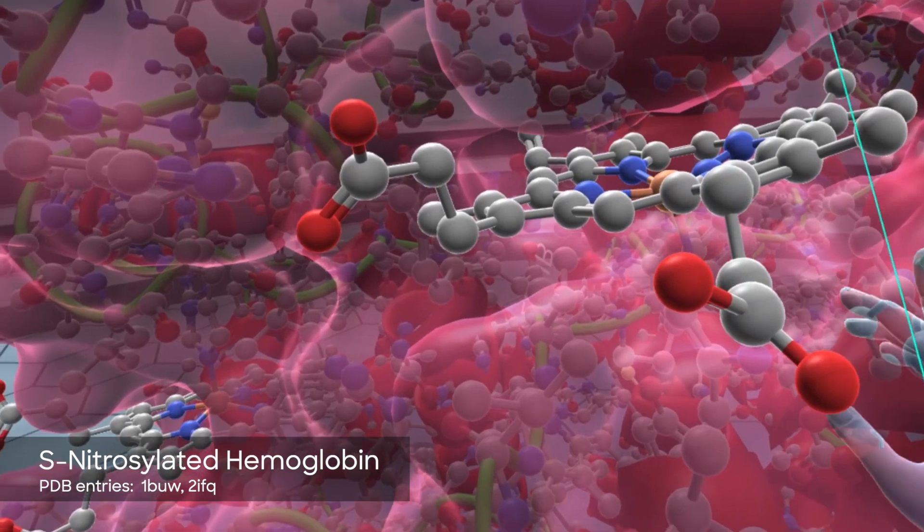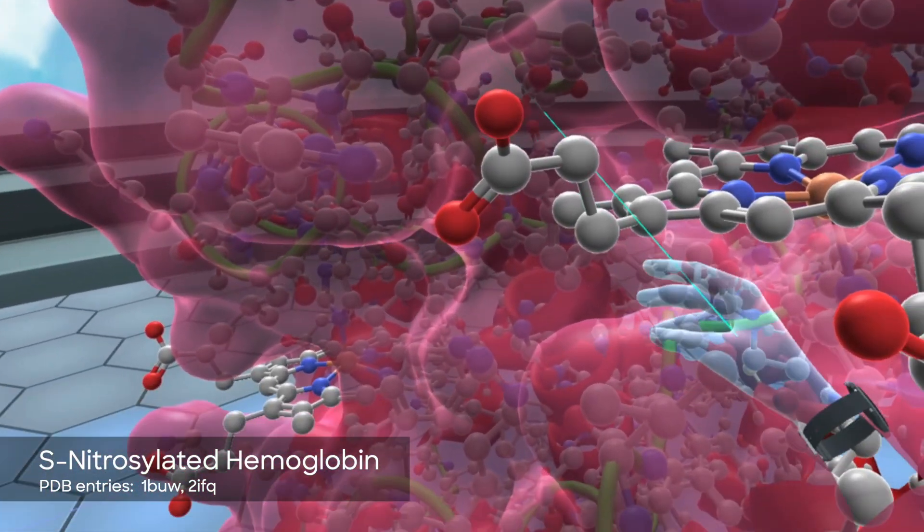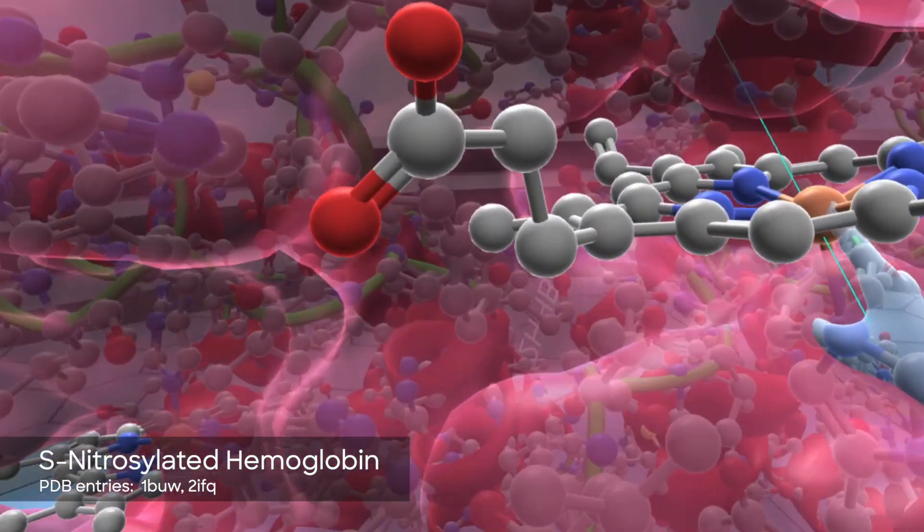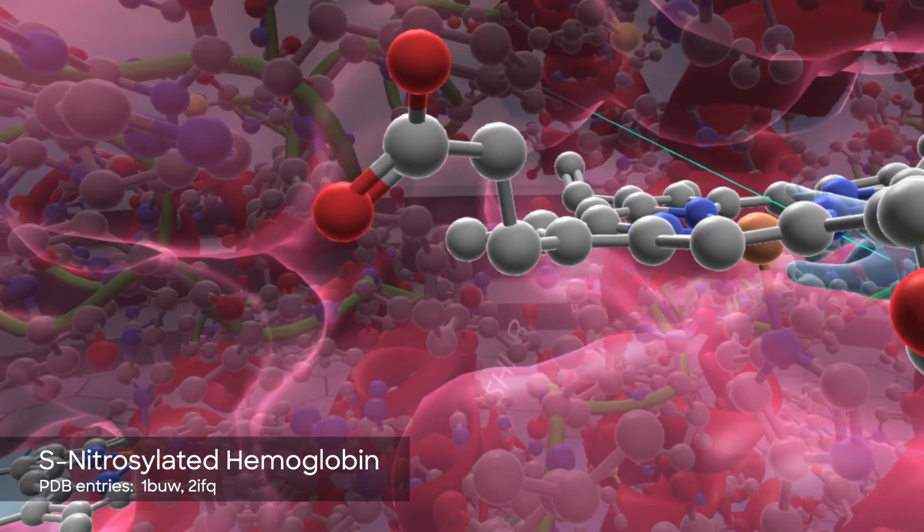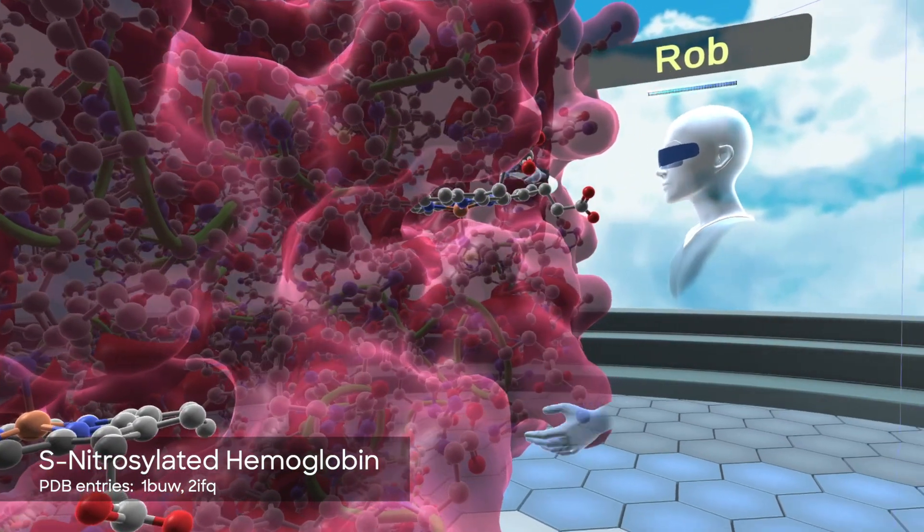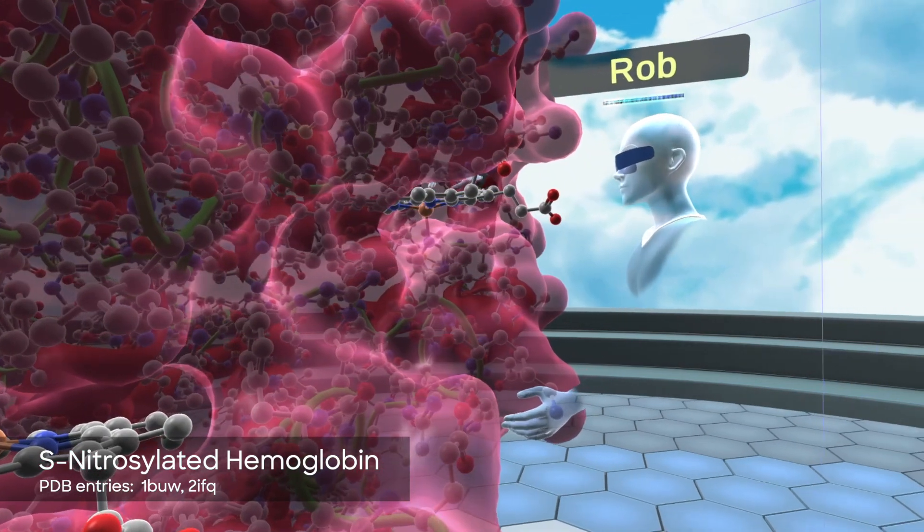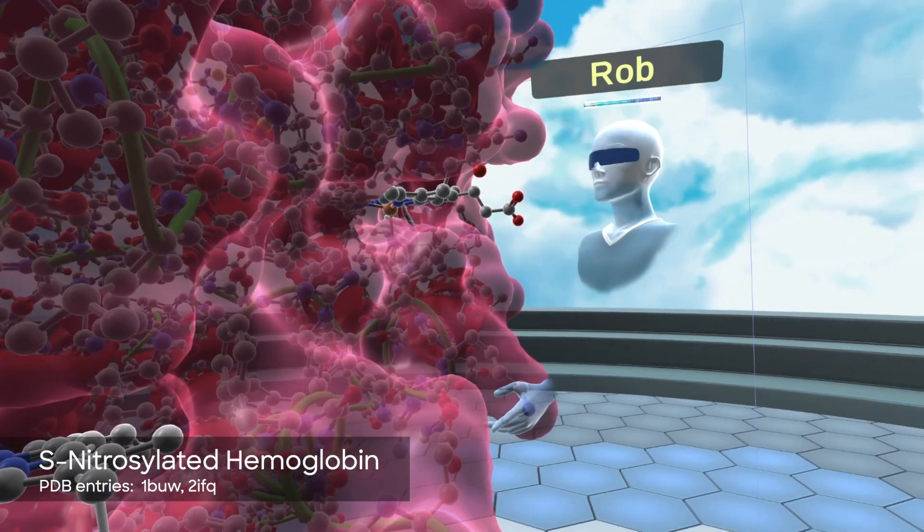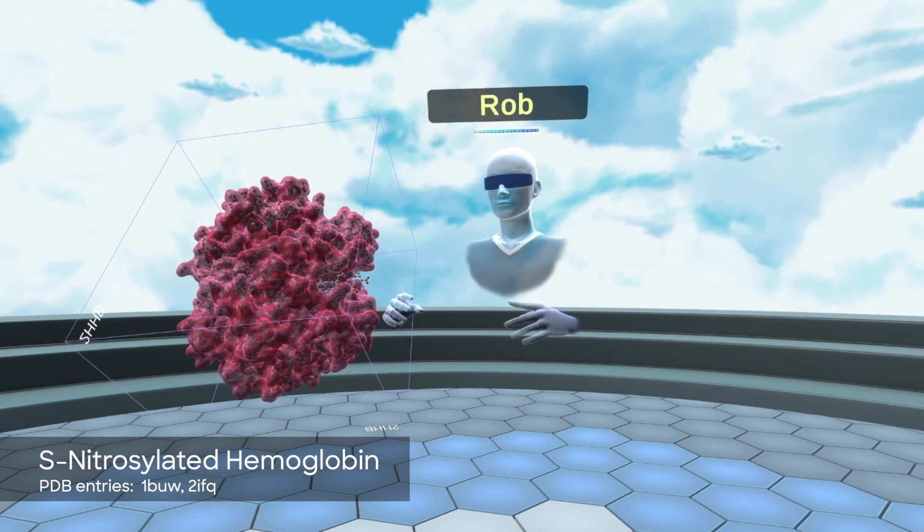So as we can see in here on this ligand, which is called a heme, we have an iron molecule in the center colored in orange. So in a hemoglobin molecule, when it's oxygenated, there are oxygen molecules that are coordinated to this iron center of the heme.